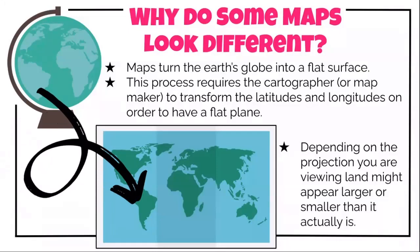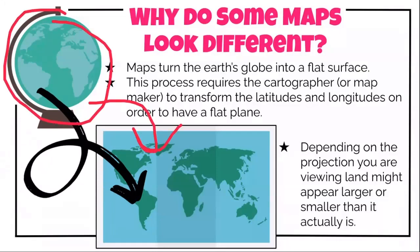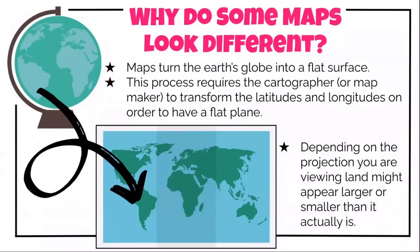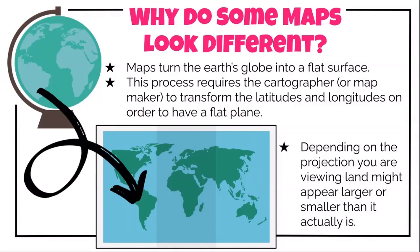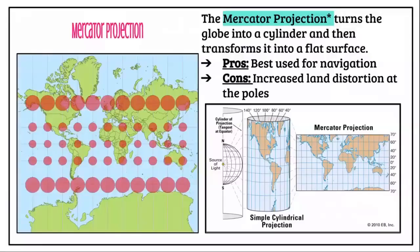Going back to this concept of scale and size — why do some maps look different? Maps turn the Earth's globe into a flat surface. The process requires the cartographer, or map maker, to transform the latitudes and longitudes in order to have a flat plane. So we take a 3D globe and turn it into 2D. Depending on the projection you're viewing, land might appear larger or smaller than it actually is.